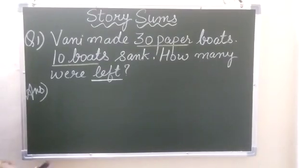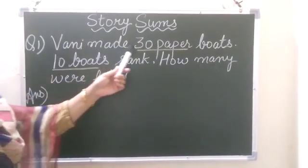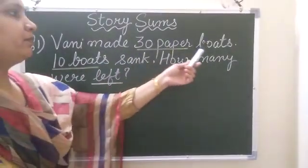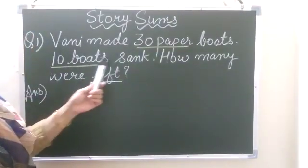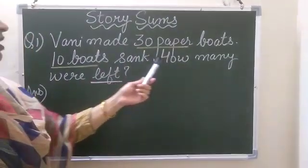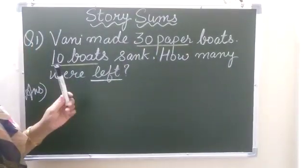Now let's start the first question. Vani made 30 paper boats. 10 boats sank. How many were left?